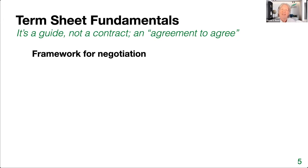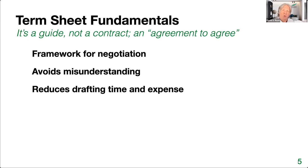A term sheet is an agreement to agree in the future. It's the major big points of what you will eventually put into this big, long contract with the investor — a framework for the negotiation you're going to have about all of these terms. By agreeing upfront on the major terms, you avoid a lot of misunderstanding on both sides. It also can reduce drafting time enormously because investors have done this so many times and there are a lot of standard things — if everybody agrees on a standard way, you can make all of that sort of disappear. When you sign a term sheet, it's not legally binding. It's an agreement to agree — an agreement to create an agreement that will absolutely be legally binding on everybody.